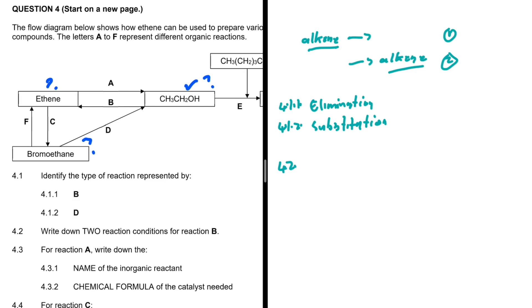For 4.2, write down two reaction conditions for reaction B. Since it is an elimination reaction, heat is a reaction condition for all elimination reactions — that is our first answer. We also have dehydration: an alcohol turning into an alkene, so we need a dehydrating agent. We can use a catalyst such as H₂SO₄ as the second reaction condition.